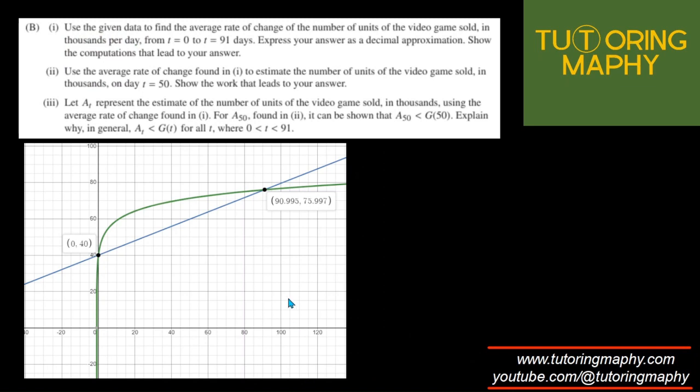So what I did is I graphed both A and G. The green one is the G function. This is G of T. And the blue one is the A of T, which is the straight line. And as you can see that between 0 at T equal to 0 and T equal to 91 around, G is always greater than T. G is always greater than T. So that is intuitive that obviously this is what they are asking.